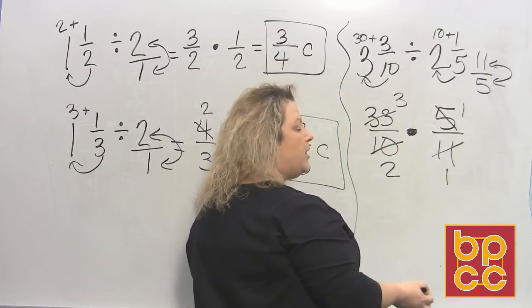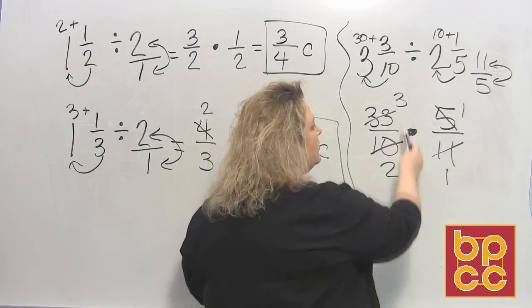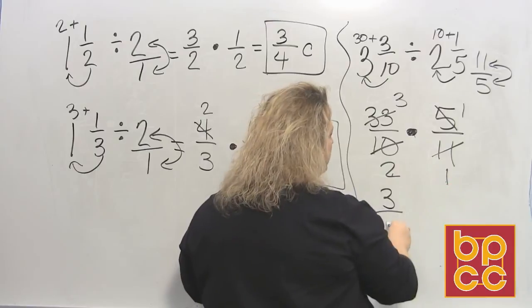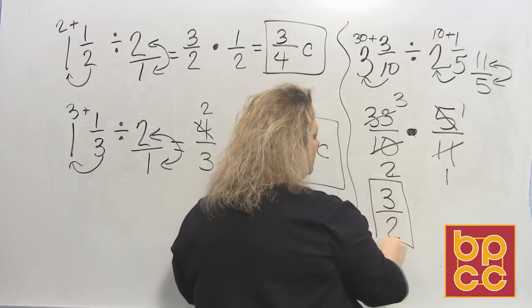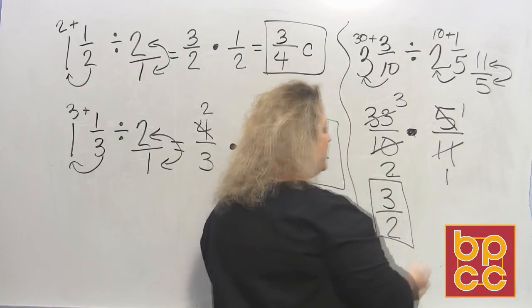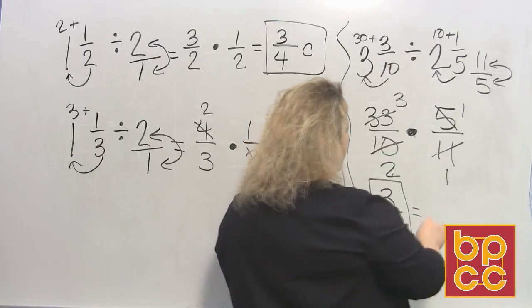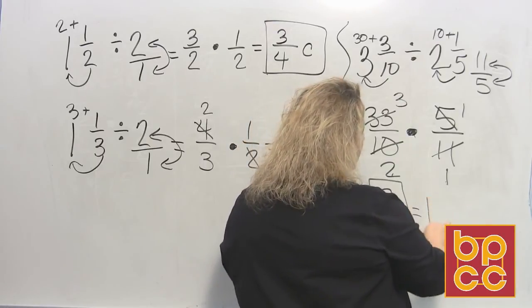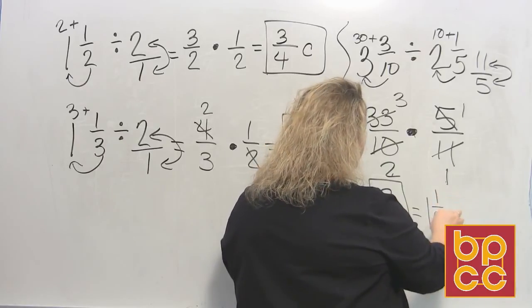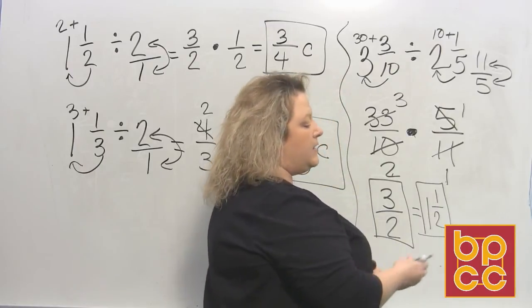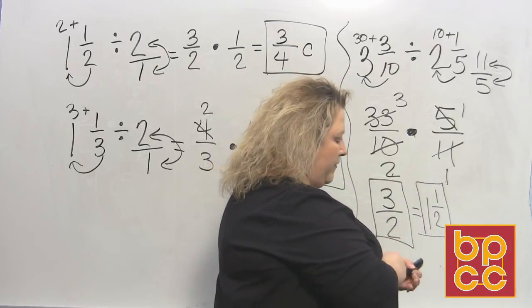Once you've done all the reducing you can do, top times top leaves me three. Bottom times bottom leaves me two. And that's three over two. Or if you're doing something more specific and you need to change it to a mixed number, two divides into three one time, and that leaves one half left over. So three over two and one and one half mean the exact same thing. They represent the same amount of information.